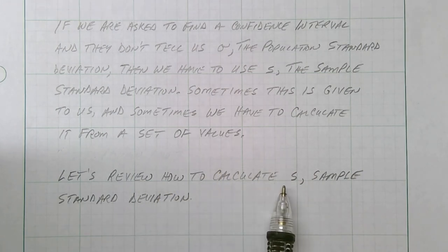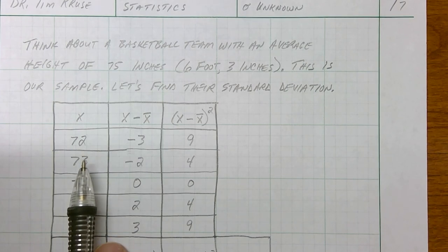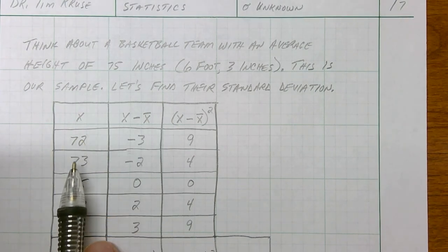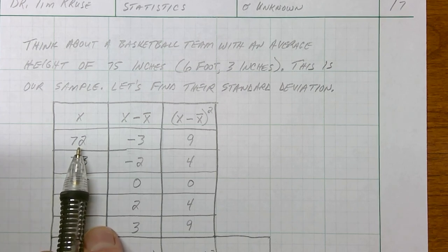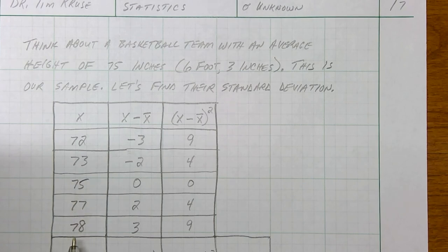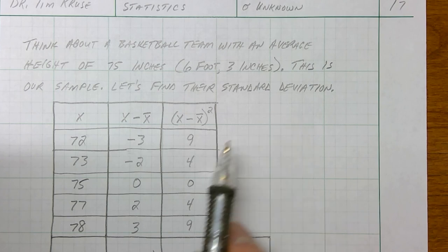Let's review where sample standard deviation comes from first. Here's an easy example about a basketball team — five players with heights in inches: 72, 73, 75, 77, and 78 inches (six foot to six foot six). Their average height is 75 inches. This is our sample — let's find their standard deviation by hand.